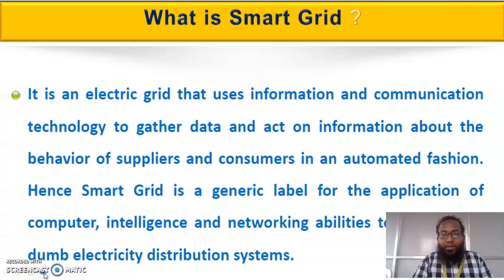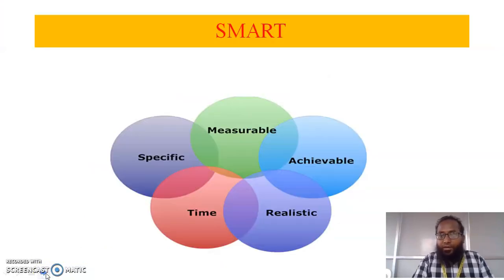First of all we have to know what is the meaning of smart grid. The smart grid is nothing but collecting or gathering data and information about the behavior of suppliers and consumers in an automated fashion. The main application of smart grid is computer intelligence and networking ability to the existing electricity distribution systems. The expansion of SMART: S denotes specific, M denotes measurable, A denotes achievable, R denotes realistic, and T stands for time.